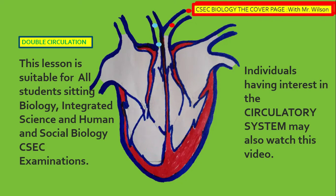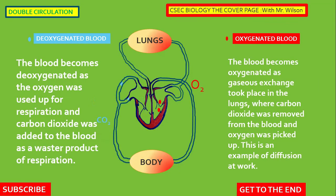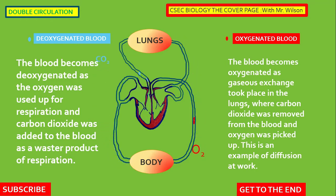Individuals interested in the circulatory system may also watch this video. It's very important for us to understand this diagram. The question will be asked: why oxygenated blood and deoxygenated blood? Now, as blood moves through the body, the process of respiration is taking place, using up the oxygen we breathe in. Carbon dioxide, being a byproduct of respiration, is added to the blood and needs to be removed. The blood becomes deoxygenated as oxygen is used up for respiration.